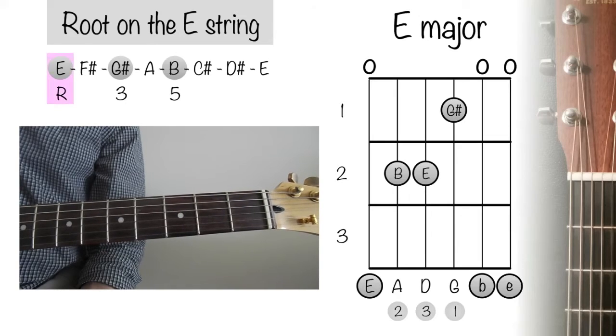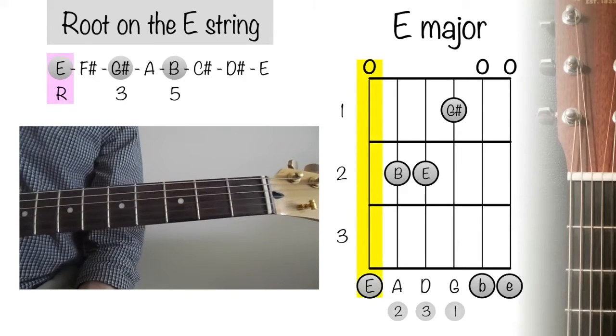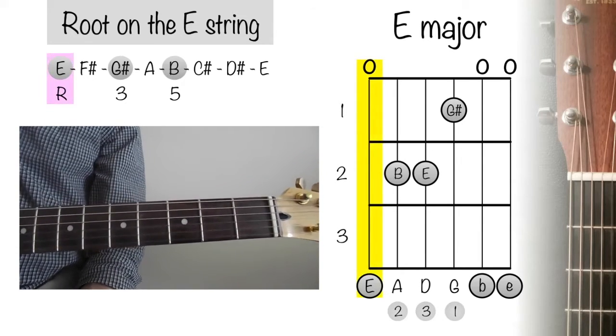Being that we want the root to be on the E string, we are going to leave string 6 open by not pressing on any frets.